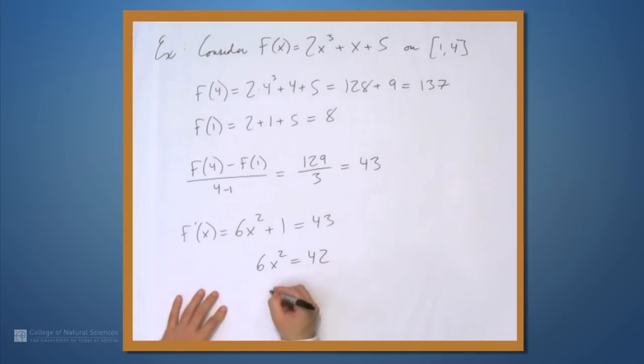Divide both sides by 6. x² = 7. And we take the square root of both sides and we get x = √7. And the square root of 7 is indeed in the interval from 1 to 4.